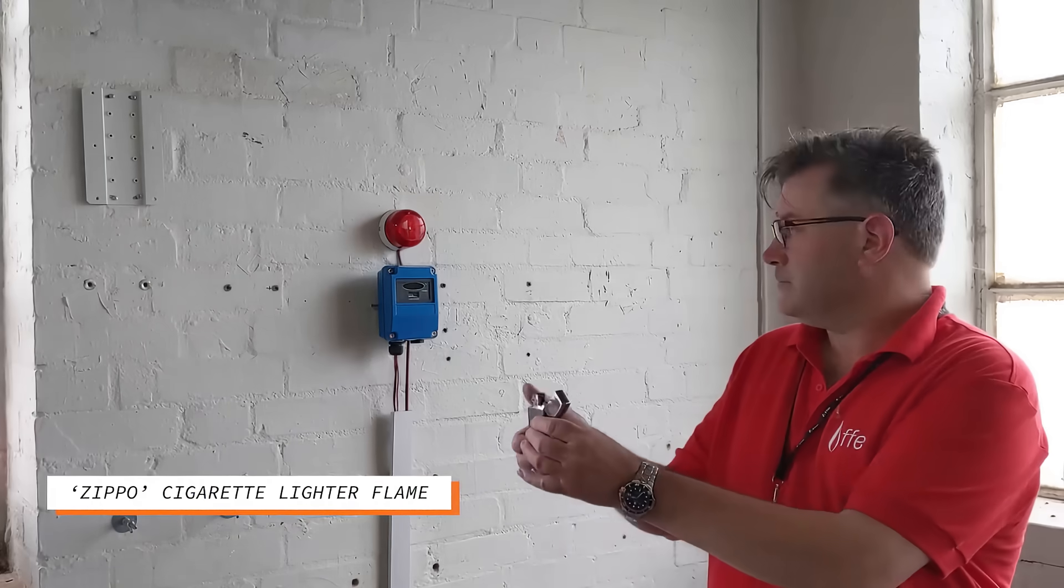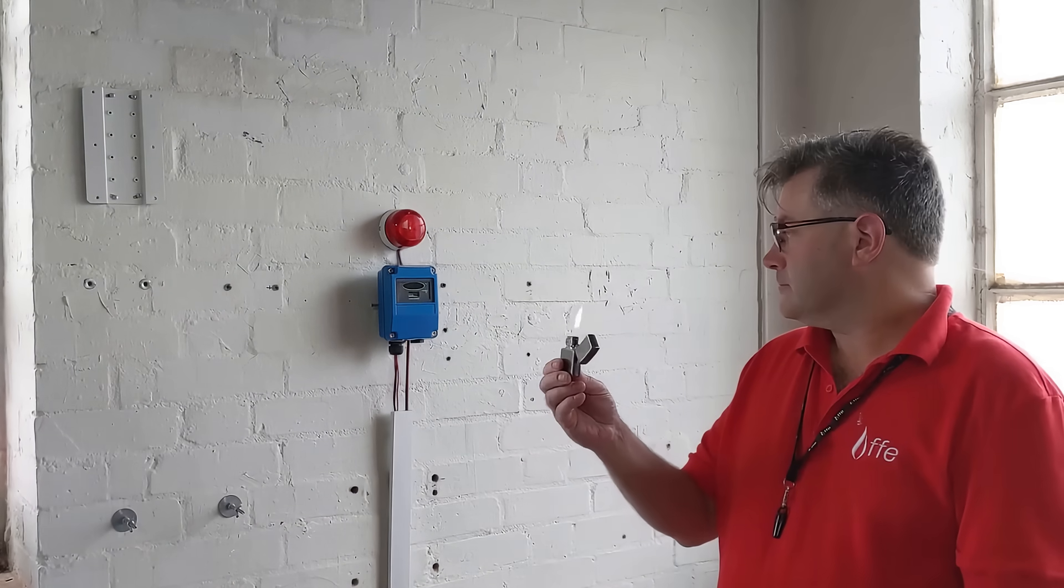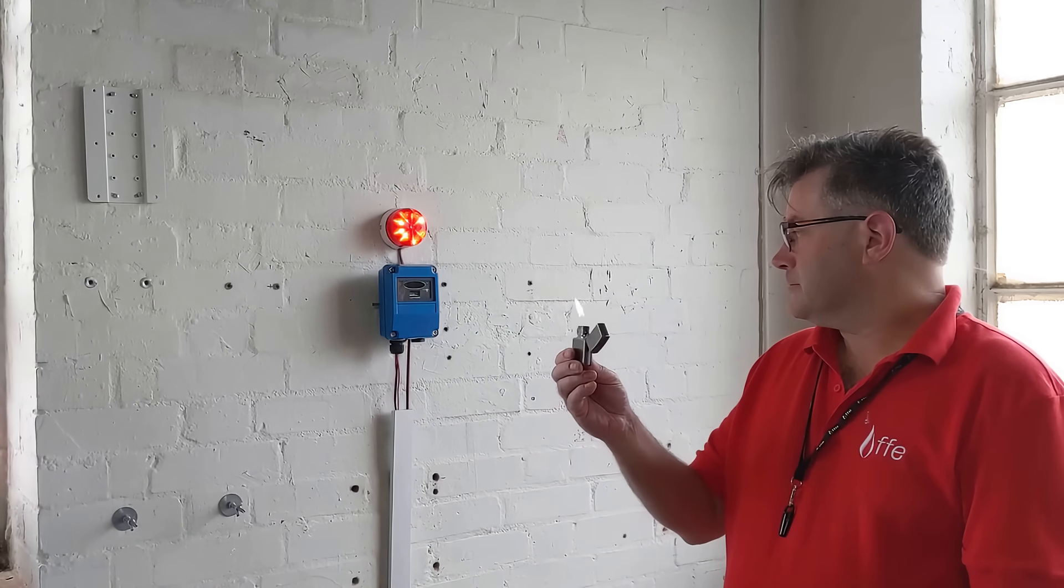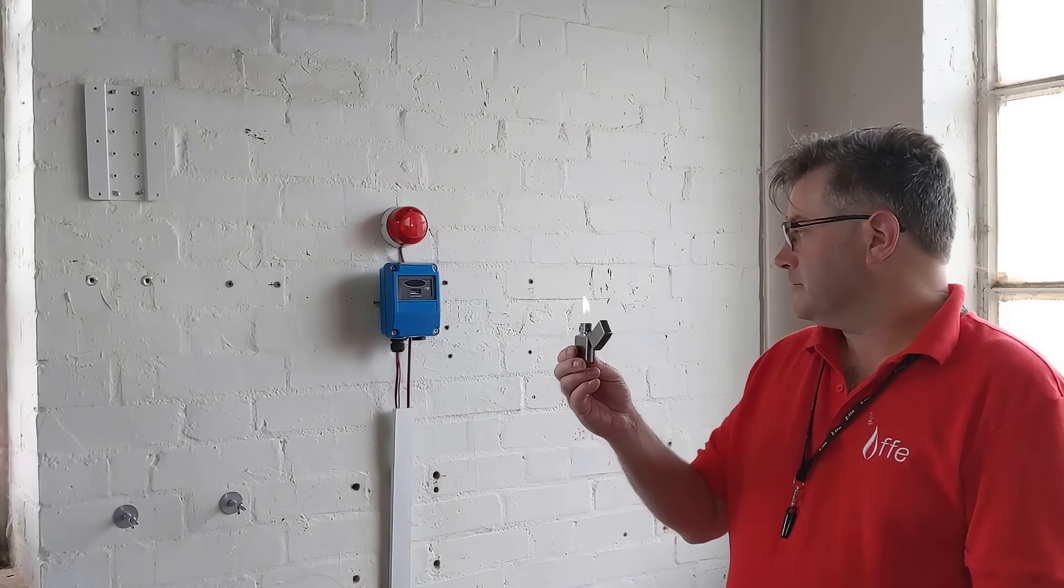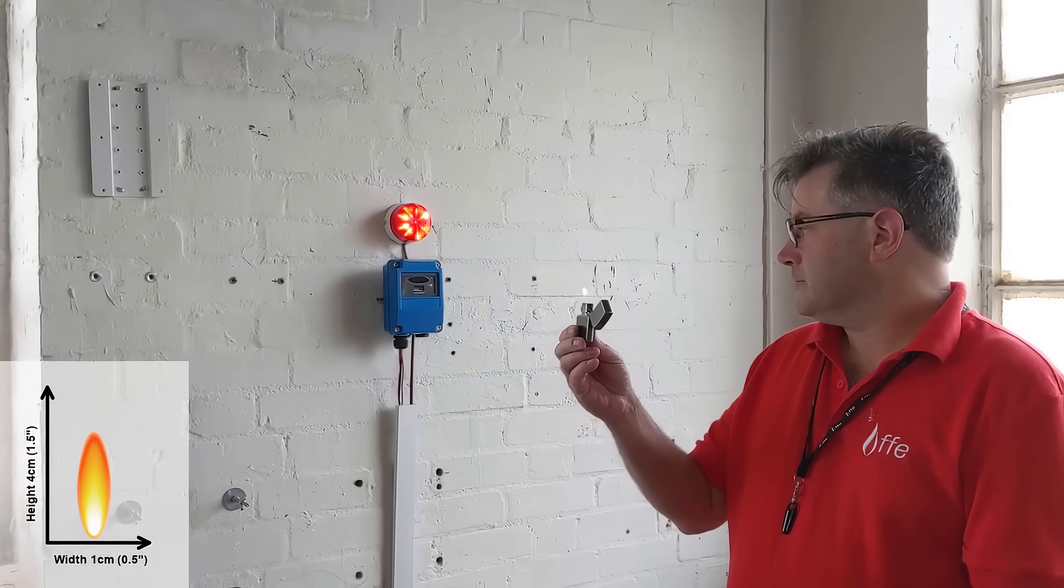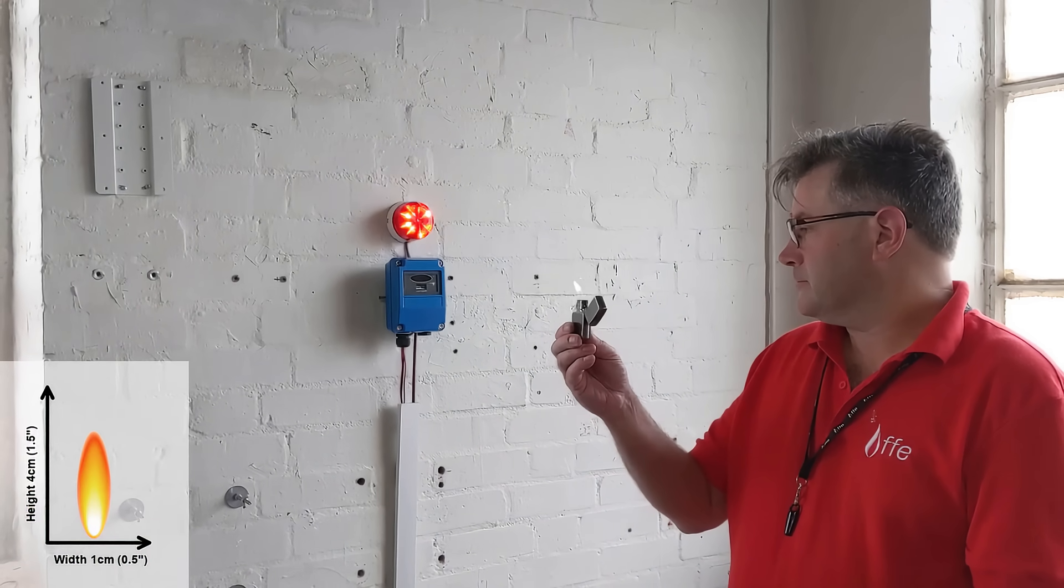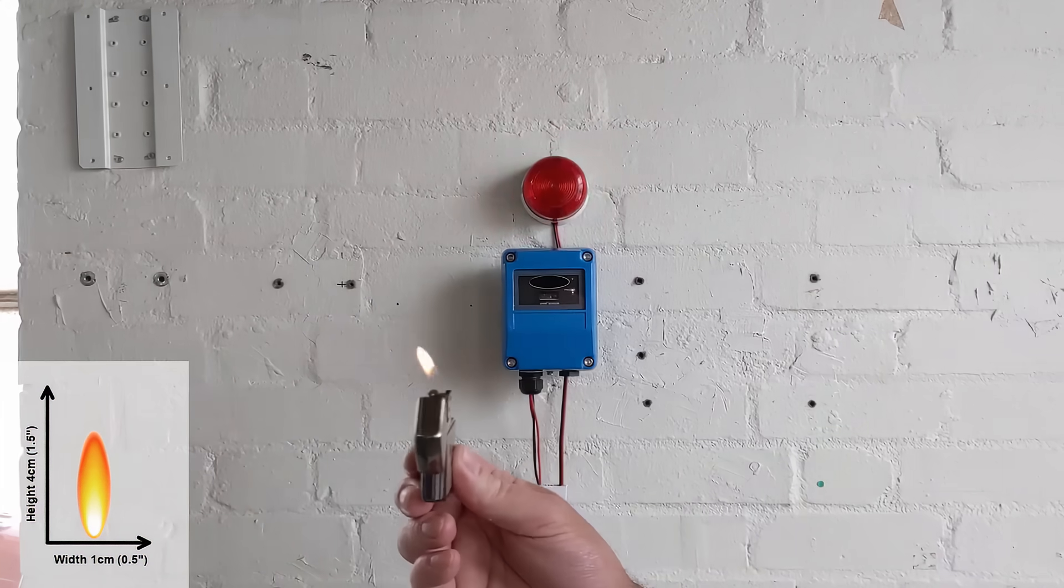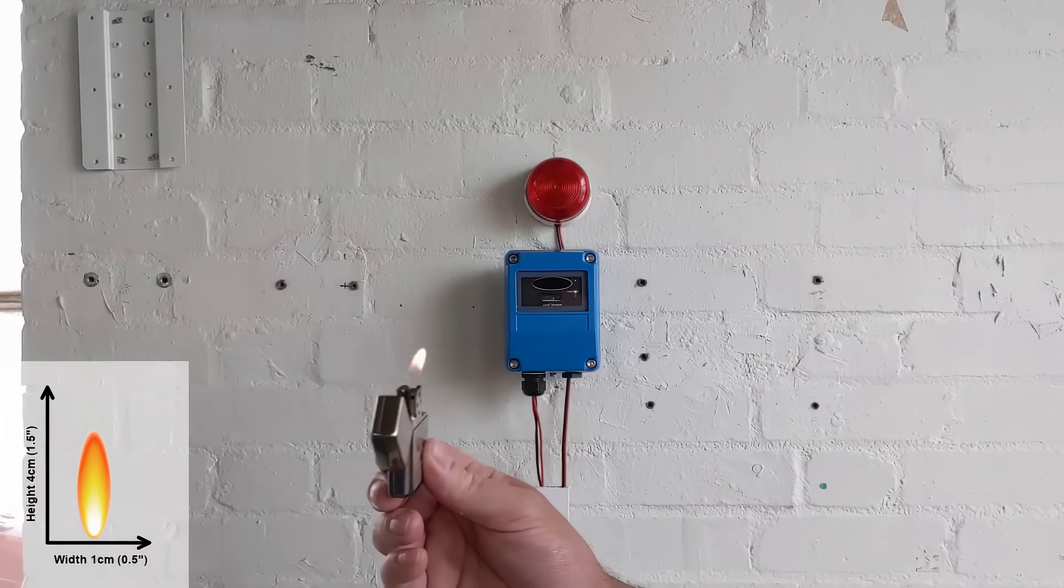Zippo cigarette lighter. The most convenient but least accurate test method is to wave a Zippo style cigarette lighter with a flame of approximately 4 cm or 1.5 inches in height and a width of 1 cm or half an inch.